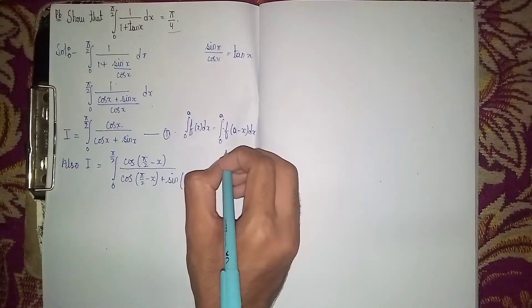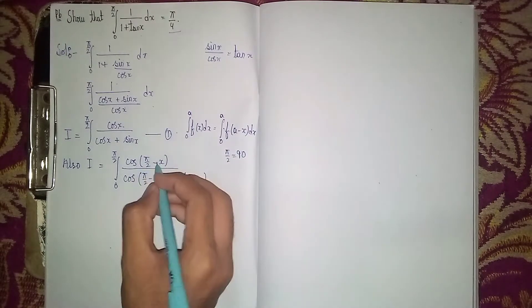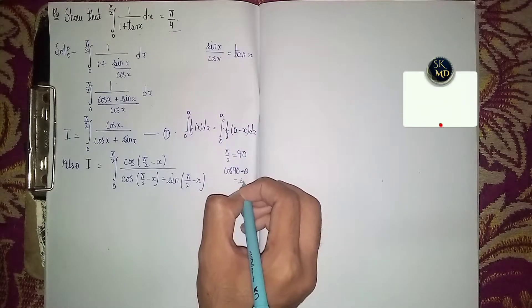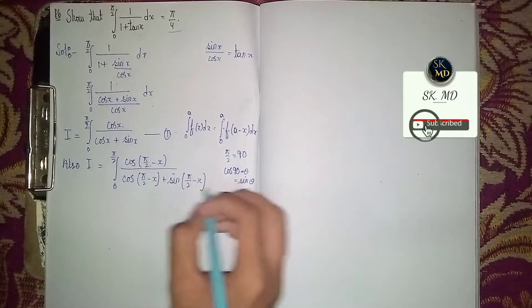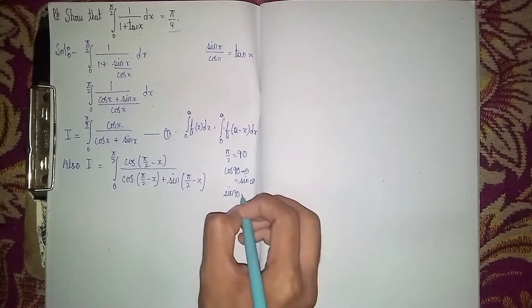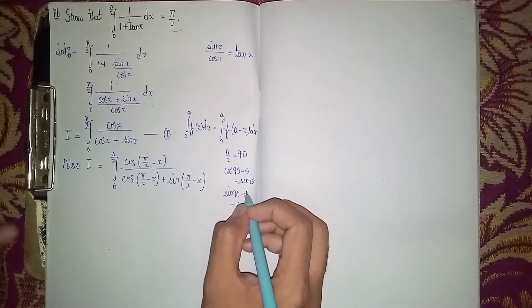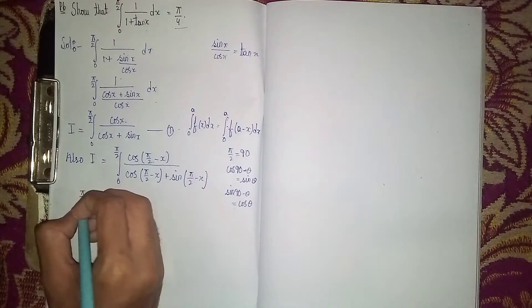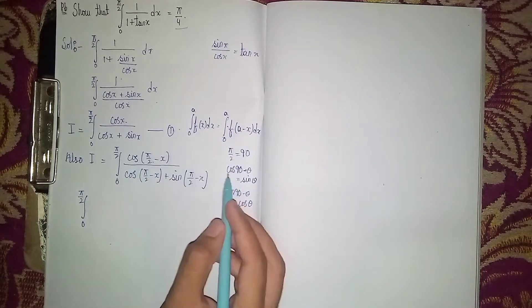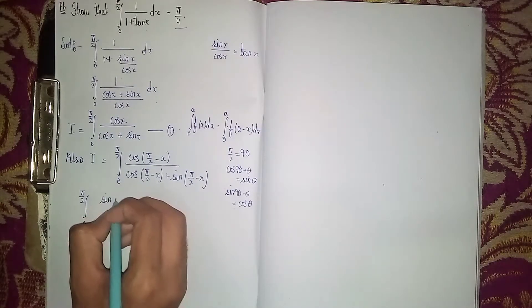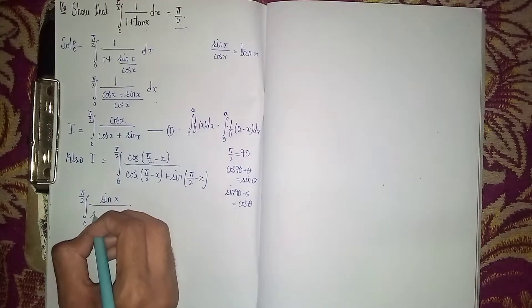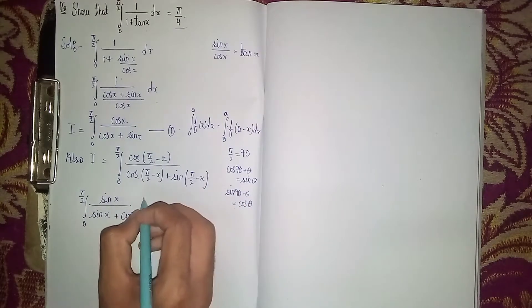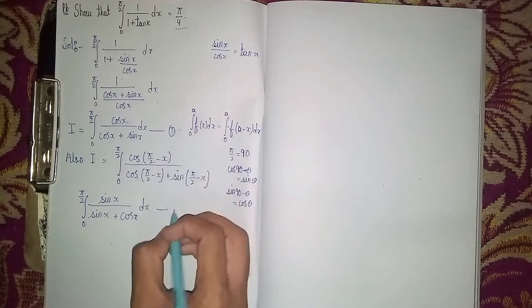Now using the trigonometry table: π/2 equals 90°. We know that cos(90° − θ) = sin θ, and sin(90° − θ) = cos θ. Applying these identities, the integral becomes the integral from 0 to π/2 of sin x / (sin x + cos x) dx. We call this equation 2.